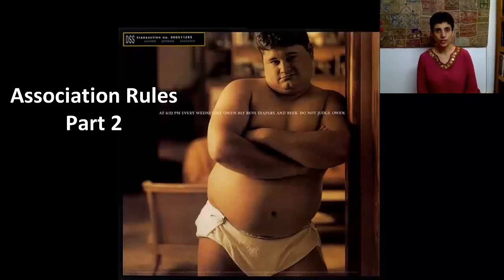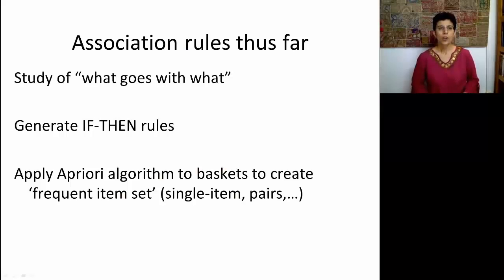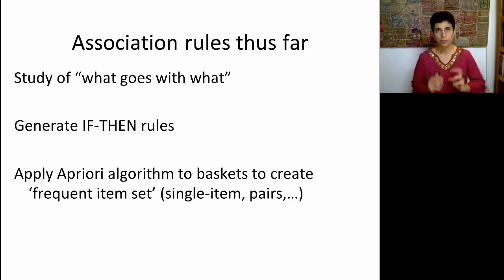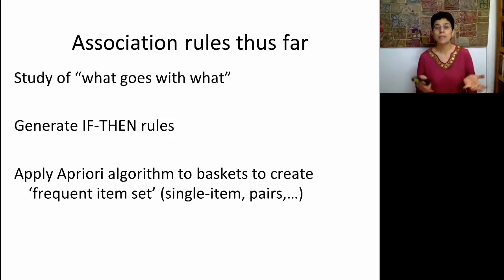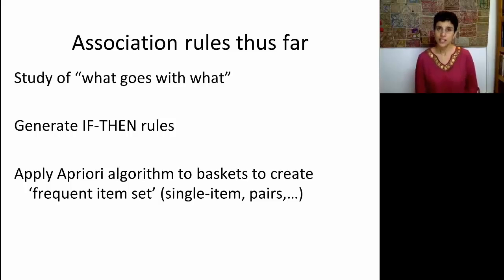In our last session, we're going to conclude talking about association rules. We established that association rules are used for finding out what goes with what in terms of items that come together in a basket. A basket doesn't have to be a physical or virtual shopping basket — it can be a combination of items, such as symptoms in a medical database. Association rules generate if-then rules that help us find dependencies between different items that tend to come together.